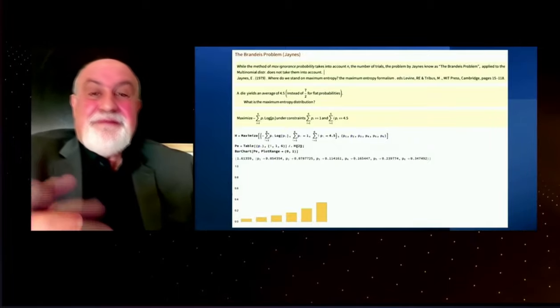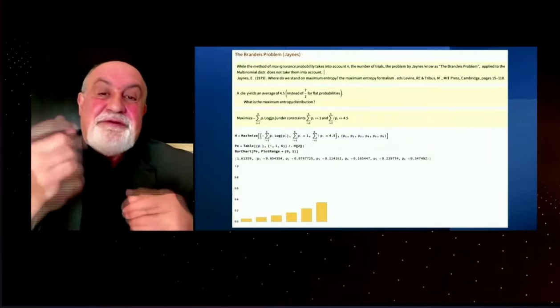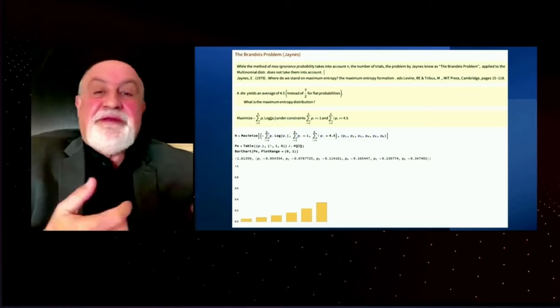And here you get this structure. In other words, the six will have a higher probability than the one. Thank you.